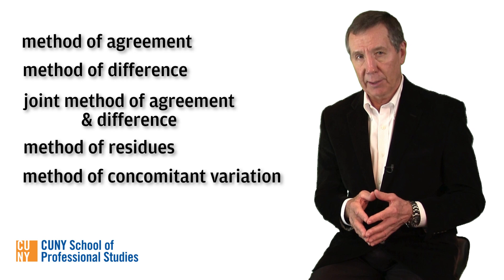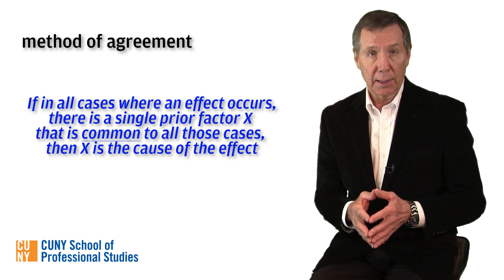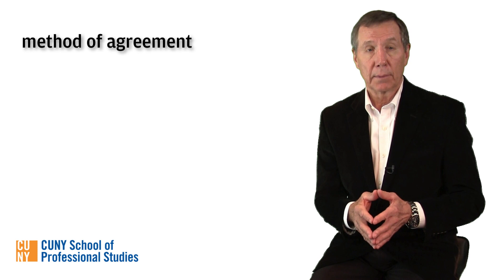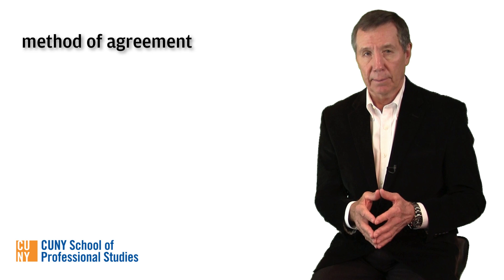The first strategy, the method of agreement, says that if in all cases where an effect occurs there is a single prior factor, x, that is common to all those cases, then x is the cause of the effect. Here's an example that's often used. Suppose you and your friends dined at a restaurant, and several hours later everyone felt really nauseated. Naturally, you begin to seek the cause, and you immediately suspect it's the food you've eaten.